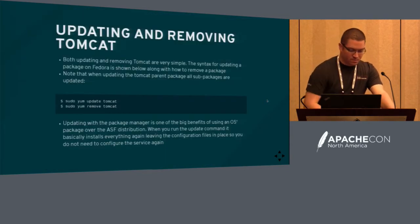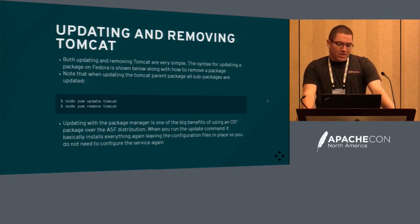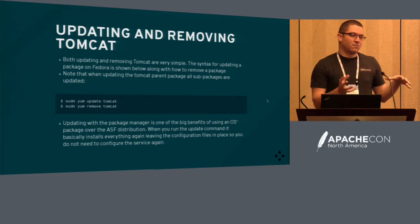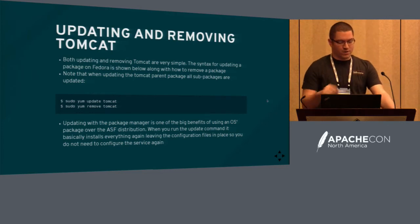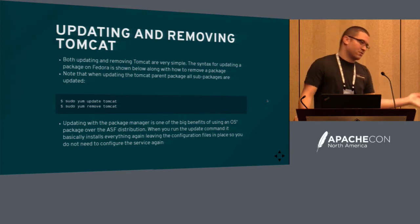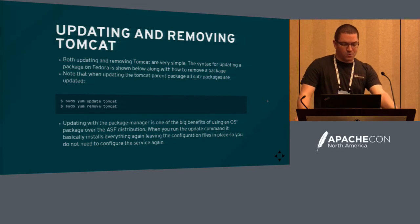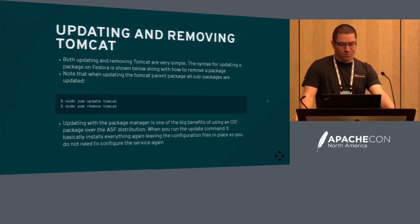For updating, you can just use the package manager again — yum update. That removes all the files that Tomcat installed previously except for configuration files marked as such in the spec, and installs all the new jars. If there are any configuration changes, it's up to the user to make those manually, because I don't want to clobber whatever configuration you have in your server.xml on an update.